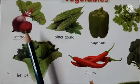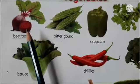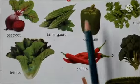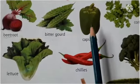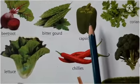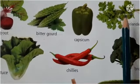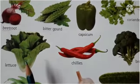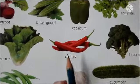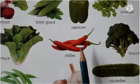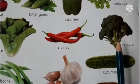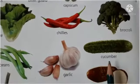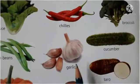As you can see here there are different types of vegetables. Here is Beetroot — Chukandar. Bitter gourd — Karela. Capsicum — Shimla Mirch. Coriander — Dhania. Lettuce — Salad. Chillies — Mirchi. Broccoli — Hari Phulgobhi. Cucumber — Kheera.